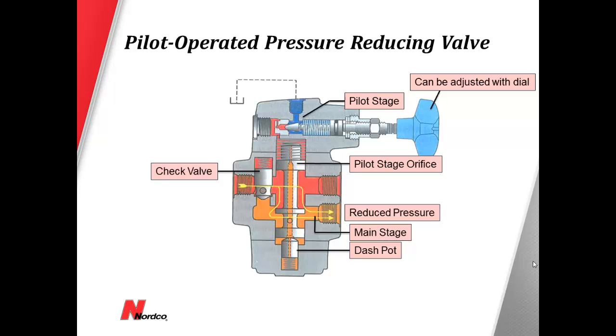A pressure reducing valve is used to regulate operating pressure in its dedicated circuit. Pressure is sensed on the outlet side of the valve.